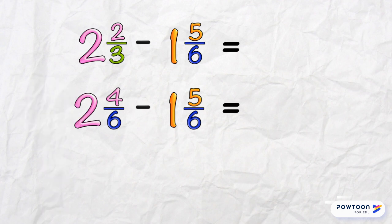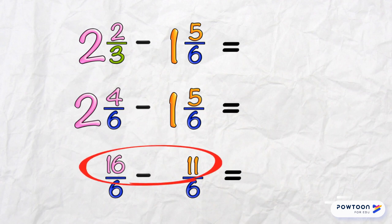2 and 4 sixths. So 2 groups of 6 is 12 plus the 4 from the numerator makes 16 over our denominator of 6. And here, we've got 1 group of 6 plus our numerator of 5. That's 11 over 6. Now we can manage it easily. We have 16 minus 11. That's 5. Our answer is 5 sixths.